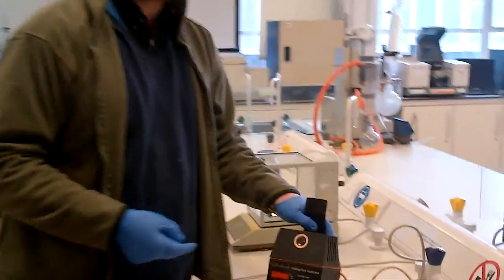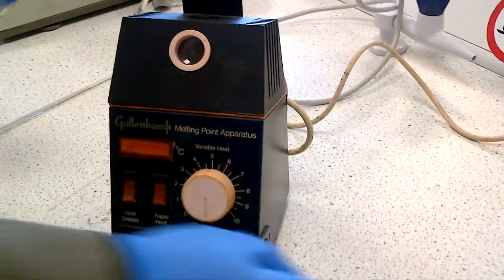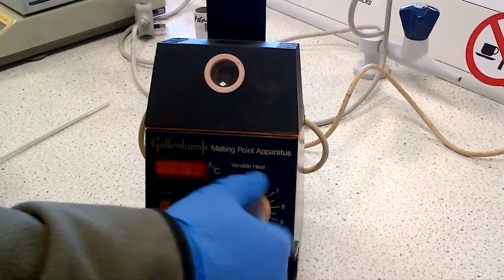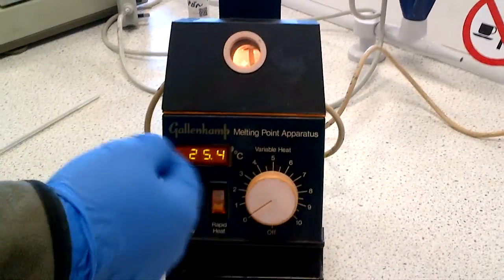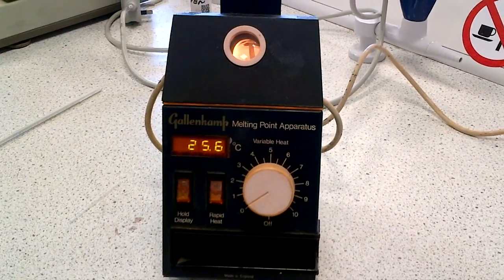So in this video demonstration, I just want to show you how to use one of these melting point apparatus. The first thing to do is switch it on at the mains, and you will notice that if you switch on with the dial, it immediately illuminates some current, it's sent through the electrodes.